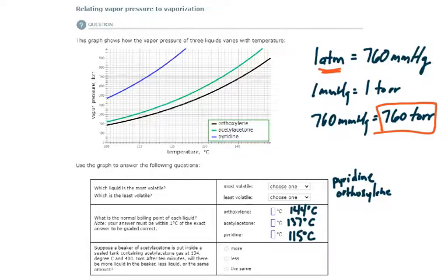So under normal atmospheric conditions, I'm in my kitchen, I'm in the lab, these substances will boil at these temperatures in degrees Celsius. And we determine that from their vapor pressure curves.